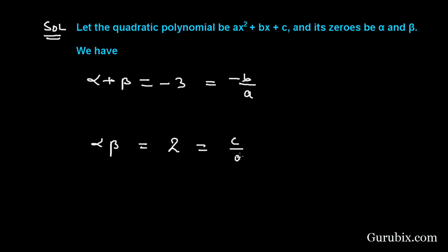Now we shall create the denominator of -3 and 2, and here we conclude that if a = 1, then b = 3 and c = 2.